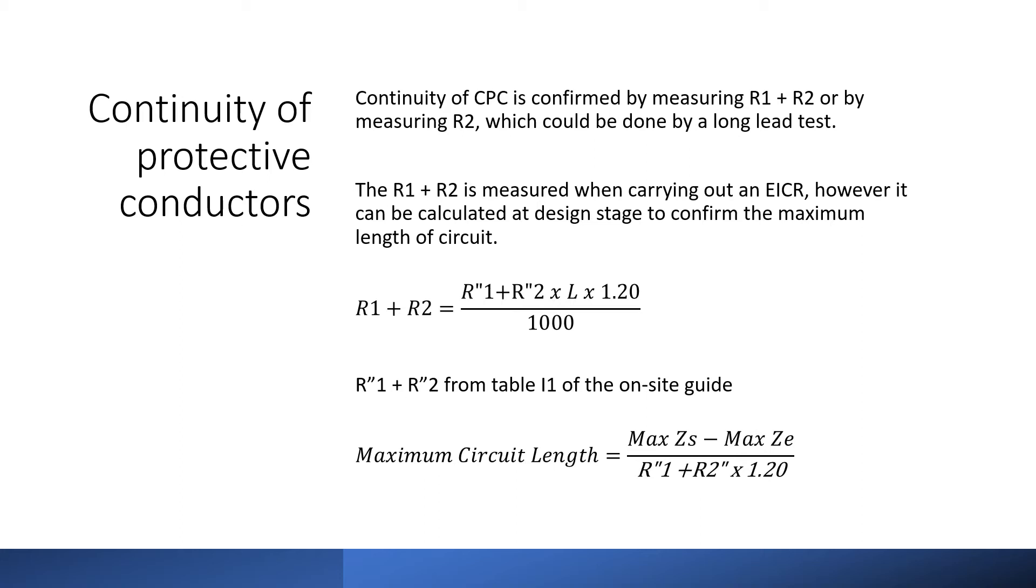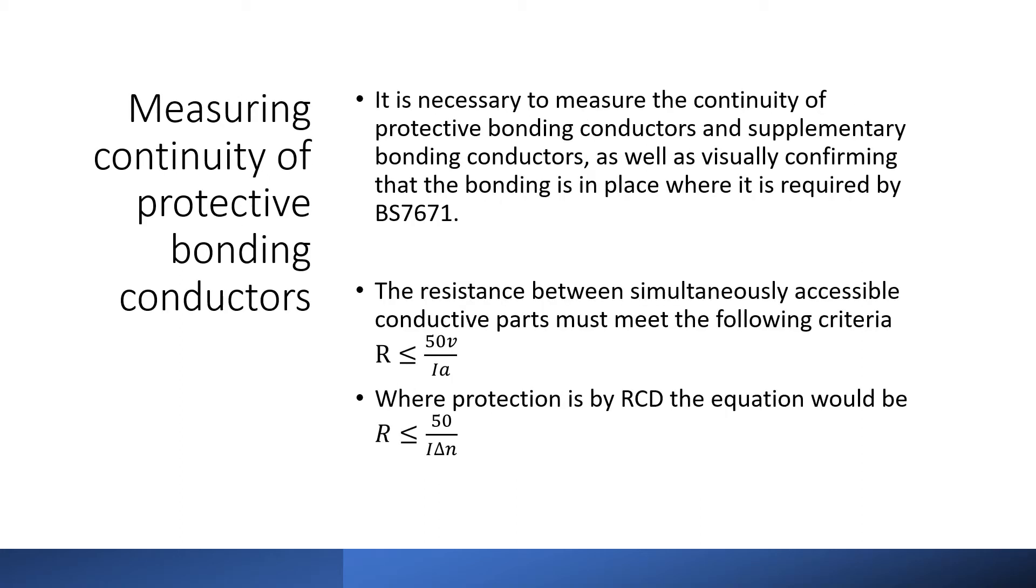Measuring Zs is still particularly important especially on socket circuits where there may be spurs taken from the circuit. As well as the individual CPCs for the circuits BS 7671 requires that continuity is checked on all protective conductors including the earthing conductor protective bonding conductors and supplementary bonding conductors.